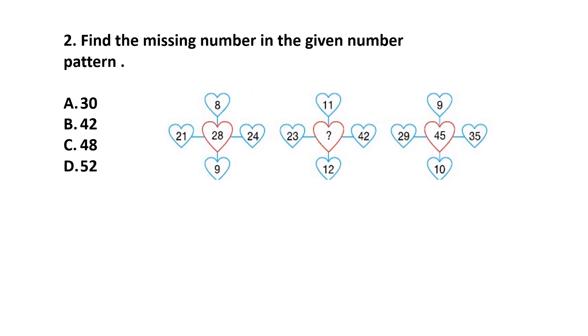Question number 2. Find the missing number in the given number pattern. Option A: 30, Option B: 42, Option C: 48, Option D: 52.